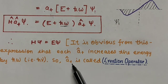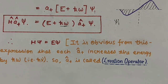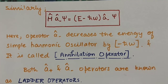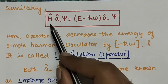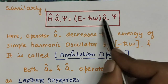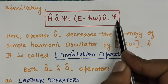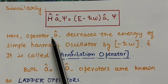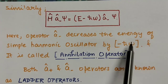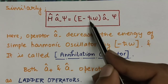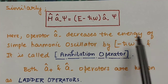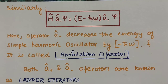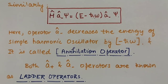From this result, it is obvious that each application of a+ increases the energy by ħω. Therefore, the operator a+ is called the creation operator because it increases the energy by ħω every single time. Similarly, for the operator a−, the result is H(a−ψ) = (E − ħω)(a−ψ), meaning a− decreases the energy by ħω. So it is called the annihilation operator.